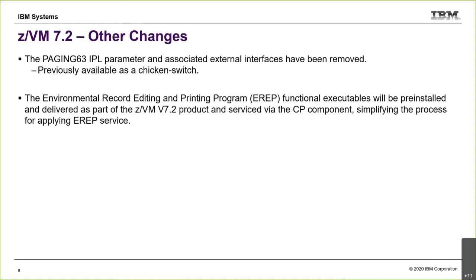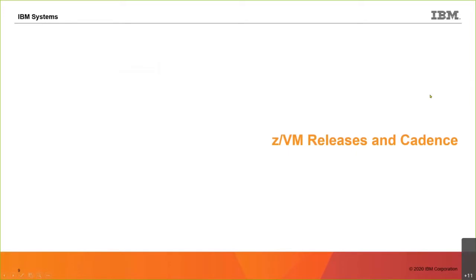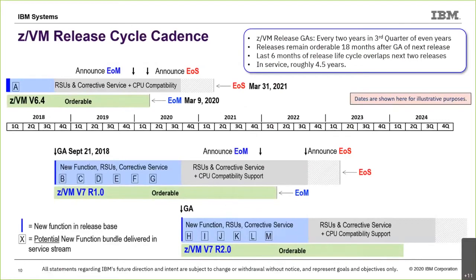Now let's review the release cadence. Starting with 7.1, we decided on a new release every two years, in even years, in the third quarter — typically September. ZOS is odd years, ZVM is even years, with the same approach. ZVM 7.1 went out in September 2018, and the upcoming 7.2 will GA in this third quarter.